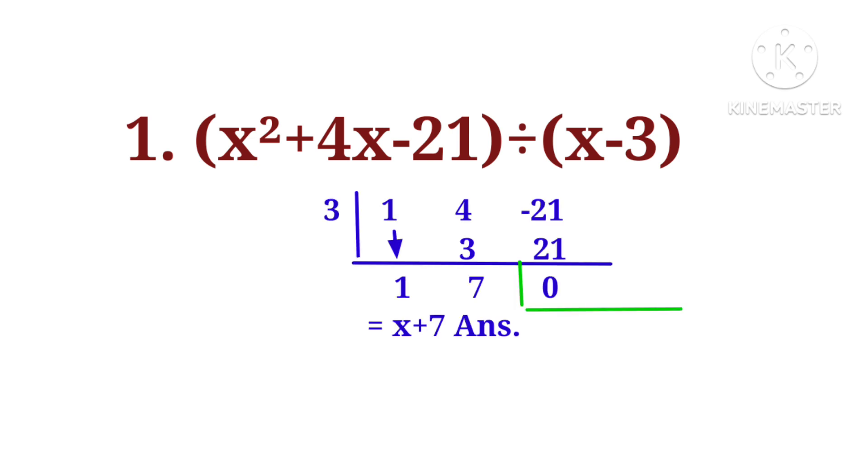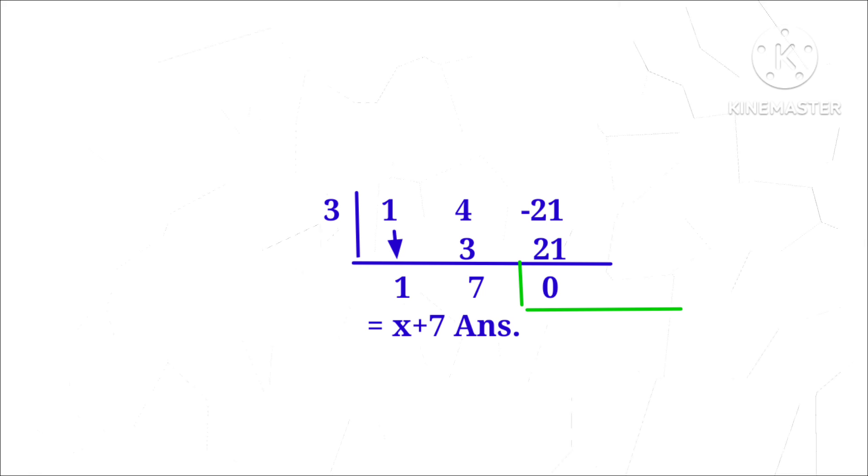Coefficient of x square is 1, coefficient of x is 4, and constant term is minus 21. 3 times 1 is 3. 4 plus 3 is equal to 7. Now, 3 times 7 is 21. Minus 21 plus 21 is 0. After adding, we get 1, 7, 0. 0 is remainder, so answer is x plus 7.